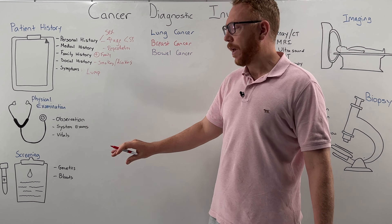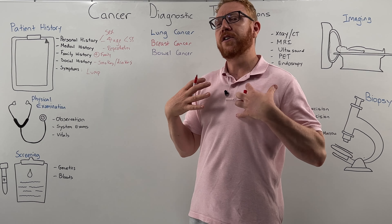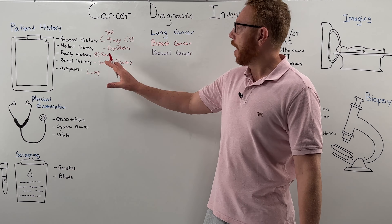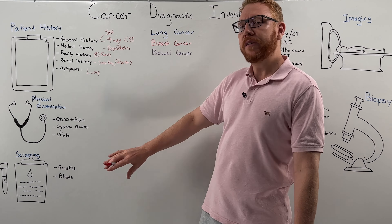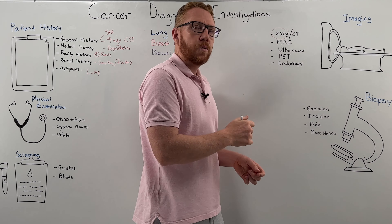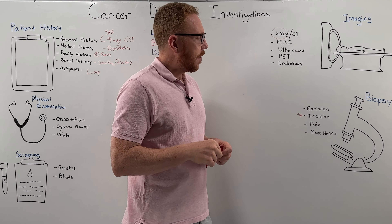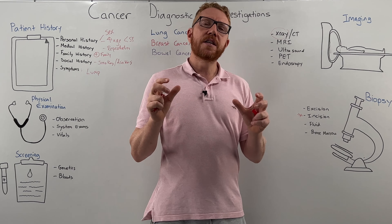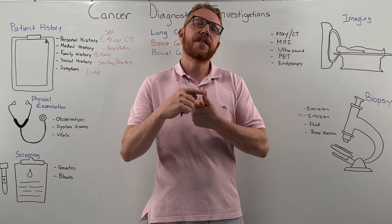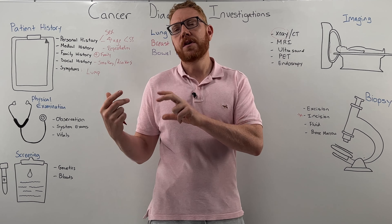Physical examination involves breast observation — looking for changes in colour, asymmetry, dimpling, or nipple discharge. Screening over age 50 is done via imaging, specifically the mammogram, which is an X-ray of the breast. If a density is identified, a core biopsy is performed under imaging guidance. Alongside the biopsy, staining techniques determine if the cancer is positive for oestrogen, progesterone, or HER2 receptors, which is important for both prognosis and treatment planning.